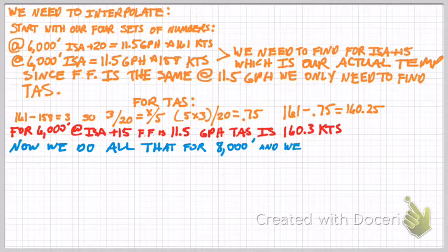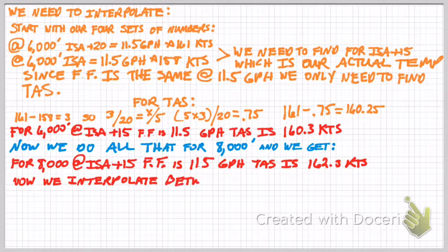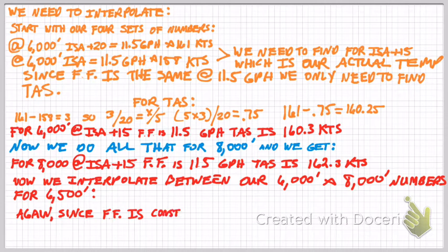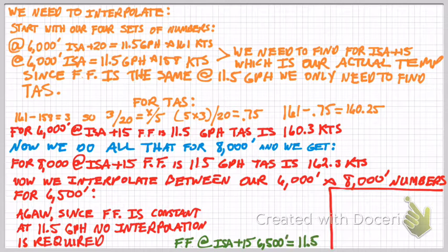We do the same thing for 8,000 feet. For 8,000 feet at ISA plus 15, fuel flow is again 11.5 GPH and true airspeed is 162.3 knots. Now we can interpolate between those two numbers to find our final value for ISA plus 15 at 6,500 feet pressure altitude. Since fuel flow is still 11.5 GPH, there's no interpolation needed for that. We now interpolate for true airspeed.